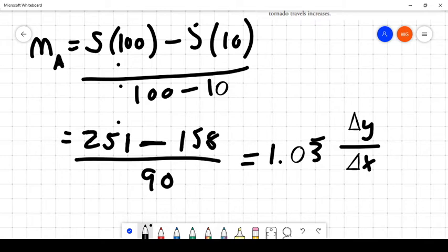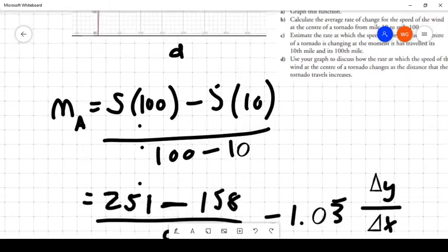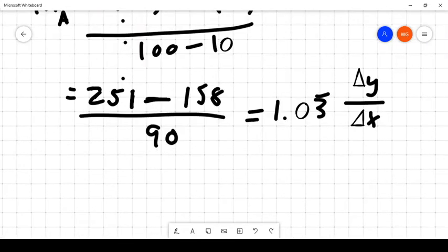So, on average, as the tornado travels from the 10th mile to the 100th mile, on average, the speed is increasing by 1 mile per hour. The speed of the wind at the center is increasing by 1 mile per hour for every mile, or 1.03 miles per hour for every mile traveled. And that's fine. I mean, that's what it is. And we have to just basically go with that for the moment. Fair enough.